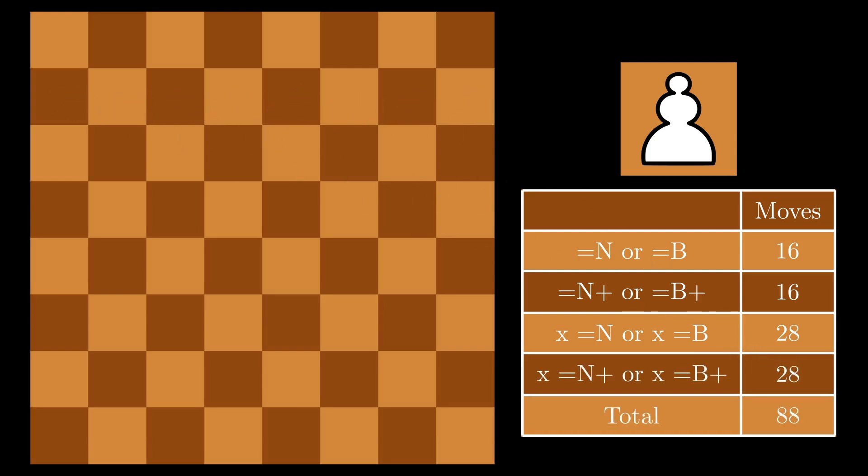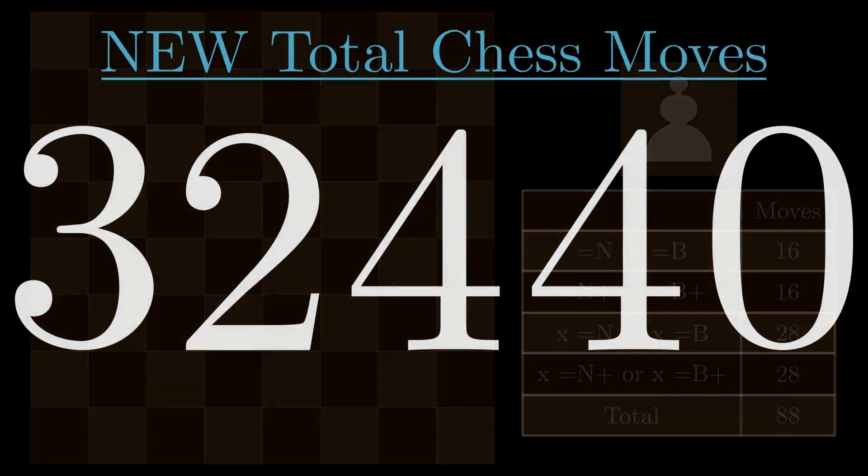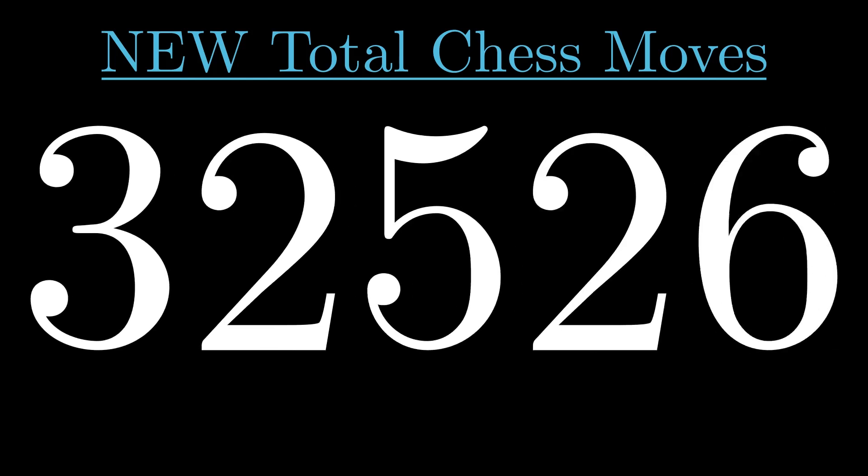This gives a grand total of 88 Pawn moves that can end the game on the spot, increasing the total number of possible chess moves to 32,528.